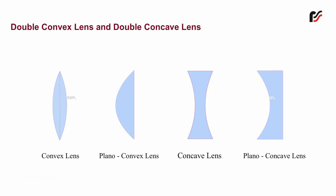The lens whose one surface is plane and the other is concave in nature is called a plano-concave lens.